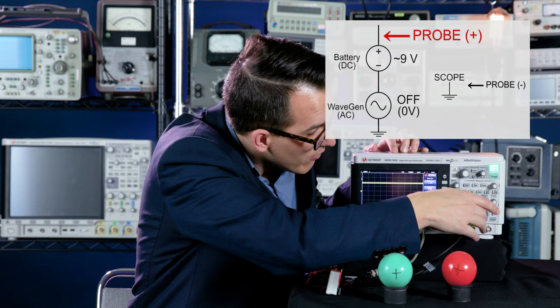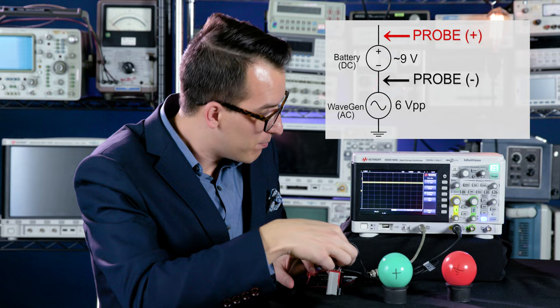But check this out. If I turn the wavegen back on, I'm seeing 15.7 volts. As soon as I connect my ground pin again, boom, I'm going to measure just the battery, just 9 volts.